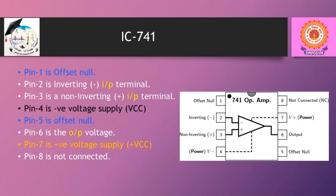Let us see the pin configuration of the commonly used op-amp IC 741. This IC is basically an 8-pin IC, in which pin number 1 and 5 are offset null. Pin number 2 is the inverting input, pin number 3 is the non-inverting input. Pin numbers 4 and 7 are negative VCC and positive VCC. Pin number 6 is the output, and pin number 8 is not connected.